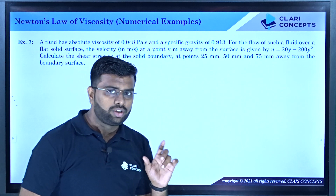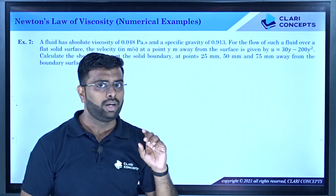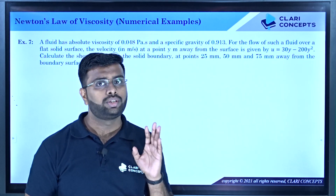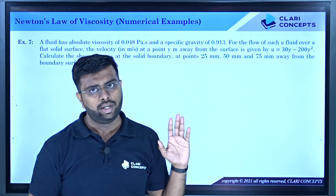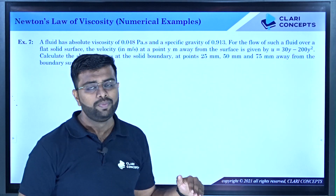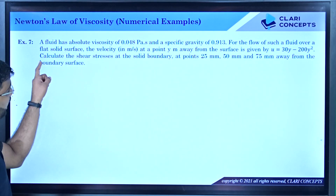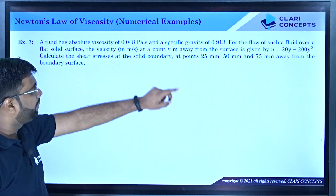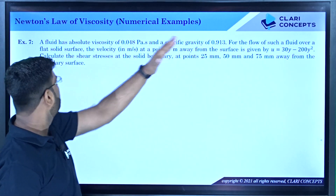Now, if you have seen some logic from this — those who have seen the previous lecture will realize that du/dy can be different at different layers. It cannot be only a constant for all dy. This means different fluid layers can have different stress values. Calculate the shear stress at the solid boundary, and at points 25 mm, 50 mm, and 75 mm away from the solid surface.